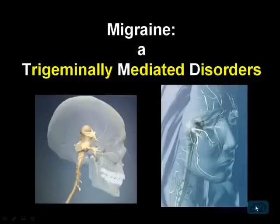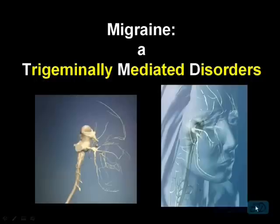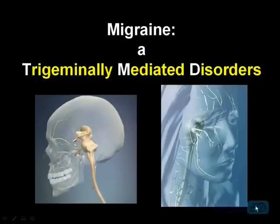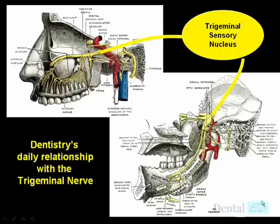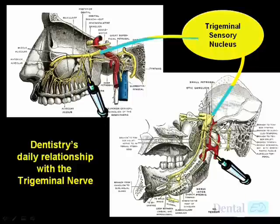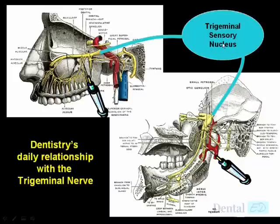Let's wrap up by bringing in migraine and seeing how this trigeminally mediated disorder is tightly connected to nocturnal parafunction. Dentistry is a relationship with the trigeminal nerve as a daily event. Our goal is to not let the trigeminal sensory nucleus know what we're doing. If you want to do a root canal, you don't want the trigeminal sensory nucleus to have any idea of what you're doing, so we block all trigeminal sensations back to the sensory nucleus because we don't want the patient to have a reflexive activity to what we're trying to do.